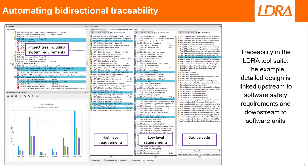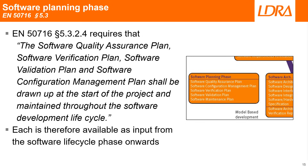Automating traceability can ease a project management headache, especially when tests fail or requirements change during development. The software planning phase of EN50716 requires that the software quality assurance plan, software verification plan, software validation plan, and software configuration management plan shall be drawn up at the start of the project and maintained throughout the software development lifecycle.